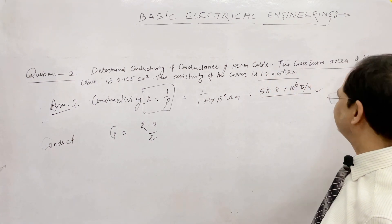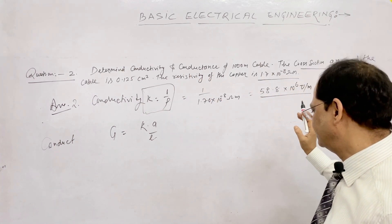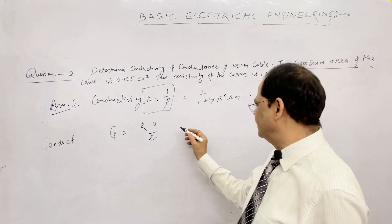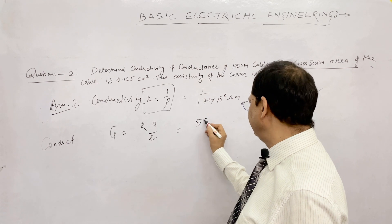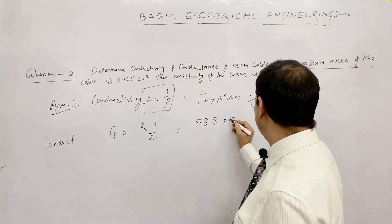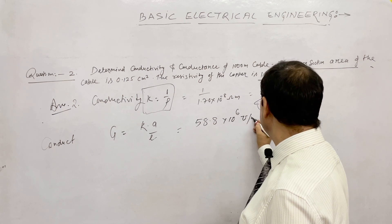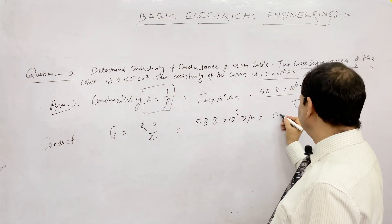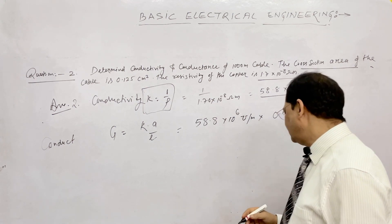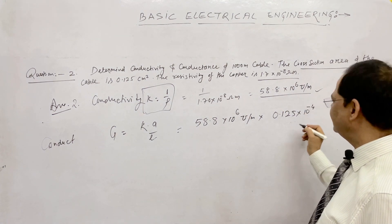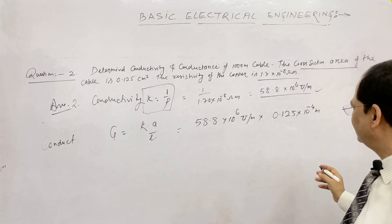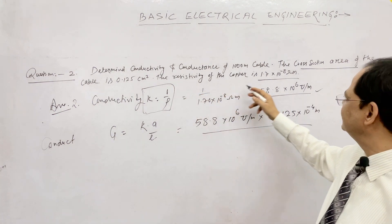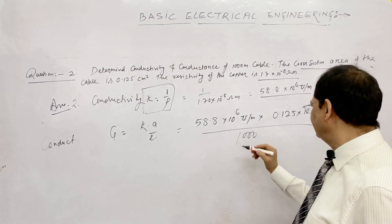The cross-section area is 0.125 cm². Converting to m²: 0.125 × 10⁻⁴ m². Now substituting: G = 58.8 × 10⁶ × 0.125 × 10⁻⁴ divided by length 1000 meters.